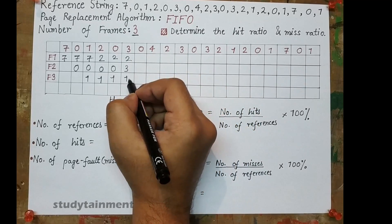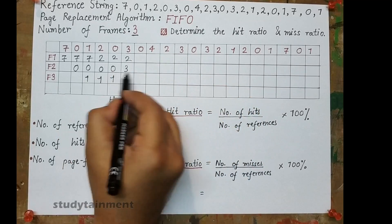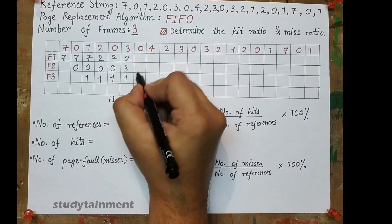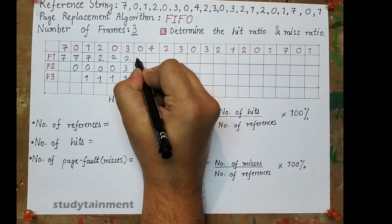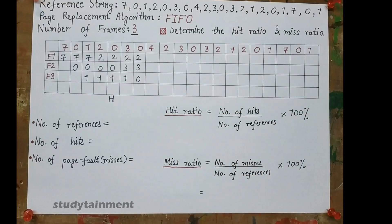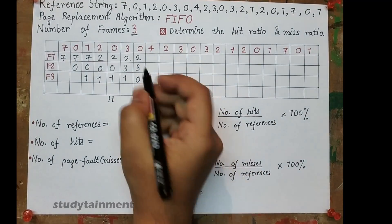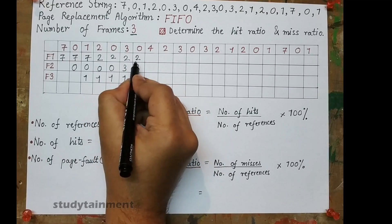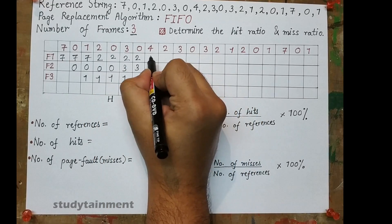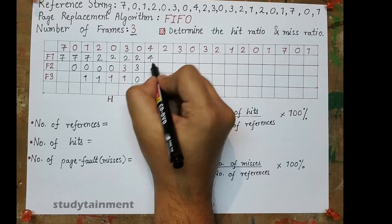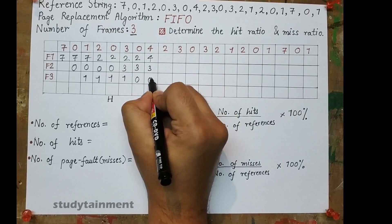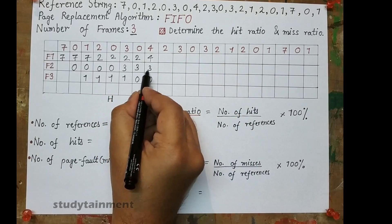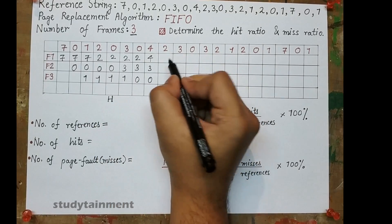0 comes again, so we have to replace. Now 1 is the oldest page, so 1 is replaced with 0 — this is also a page fault. Next, 4 arrives; 2 is the oldest, so 2 is replaced with 4. 3 and 0 remain as they are.